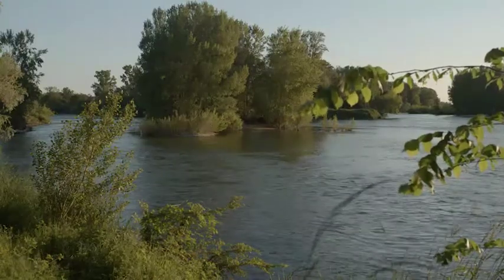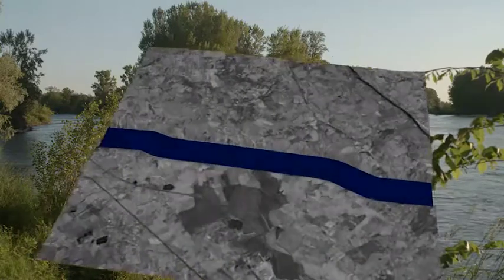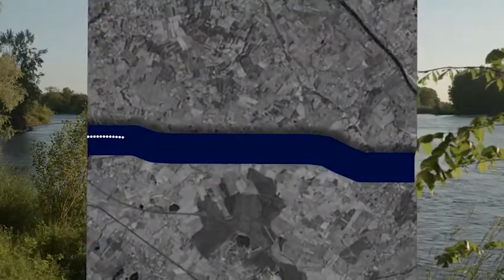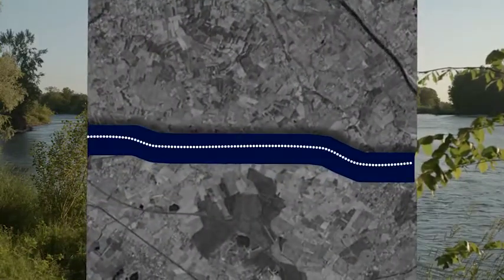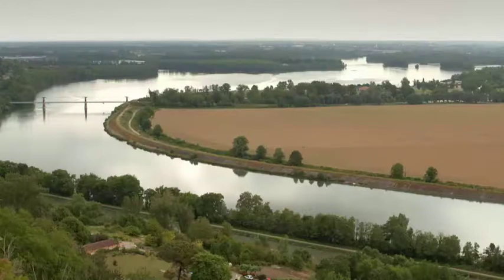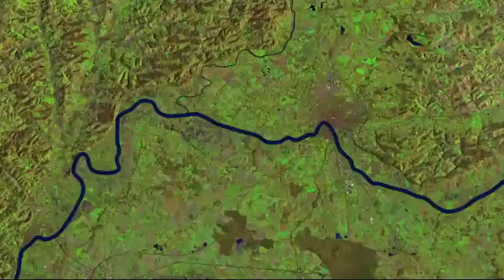The second is a node product. A node is defined every 200 meters along the center line of the river. This product provides the river height and width at each node.